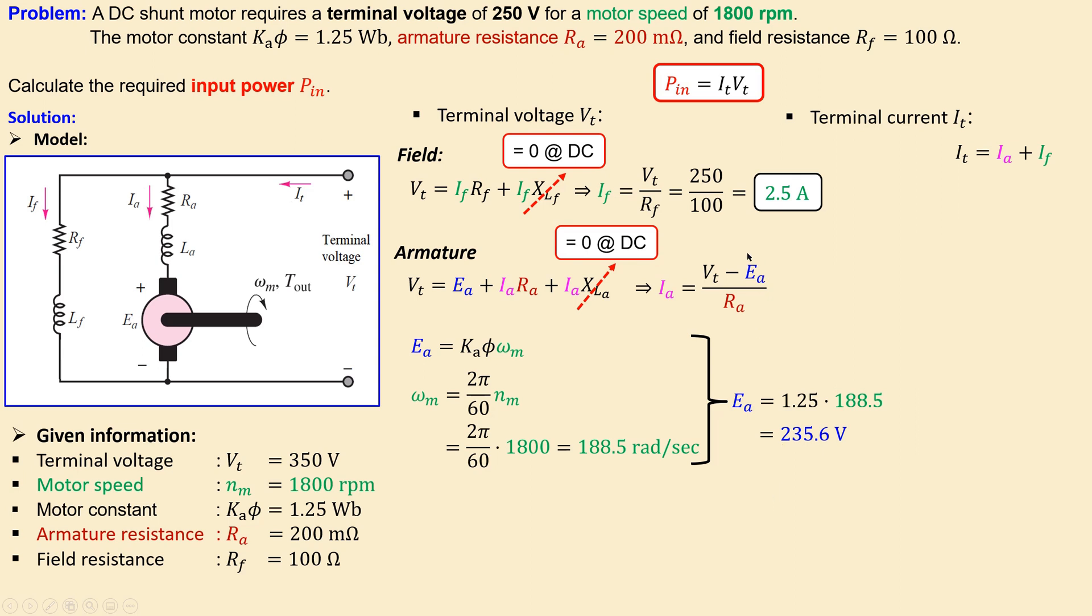Now we have the necessary information in this formula to calculate the armature current. So let's do that and we have then this expression: 0.200 for the 200 milliohms for the armature resistance and we have 71.9 amperes.